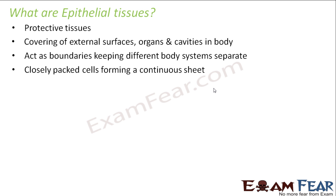Why do we need epithelial tissues to be closely packed? Because they act as boundaries, and we need those boundaries to be strong. When you build a house, you build a boundary and make sure it is strong enough because the boundary is the one actually protecting the house. Similarly, epithelial tissue acts as a boundary, so it needs to be closely packed cells with very little intercellular space.